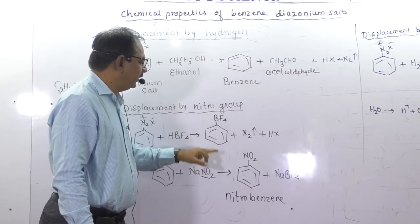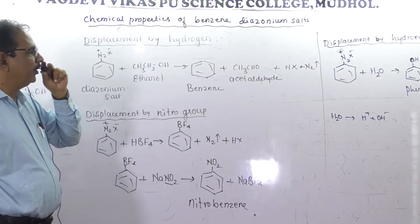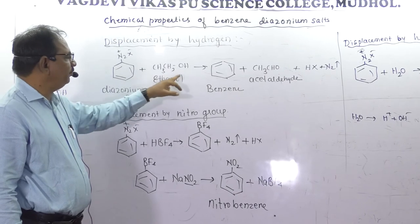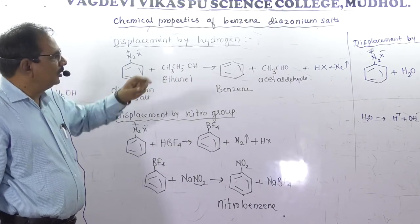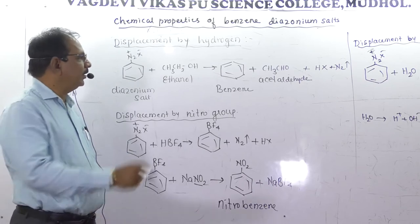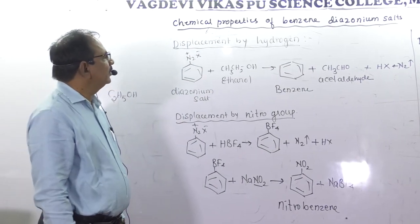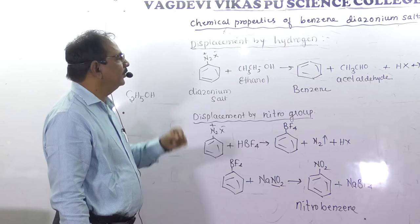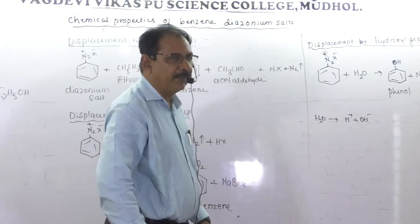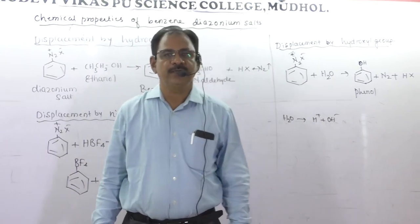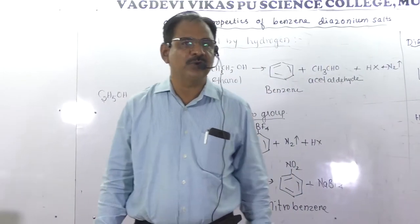These are all the reactions involving displacement of the diazo group, where nucleophiles attack the position of the diazo group. This completes the first type of reaction, which is the displacement of the diazo group. The second type is retention of the diazo group.